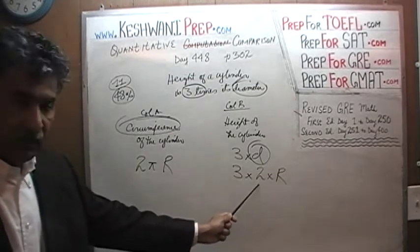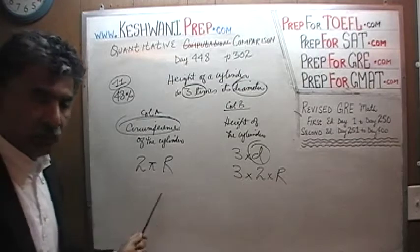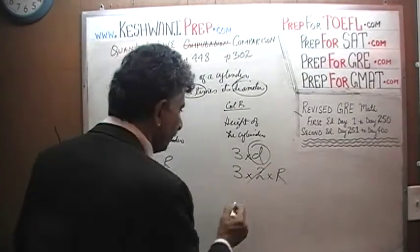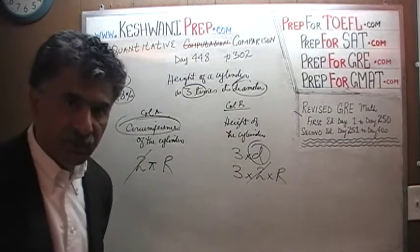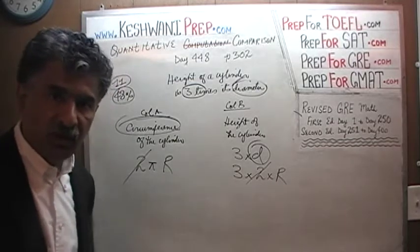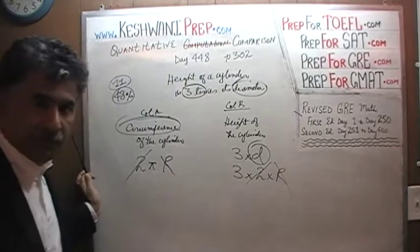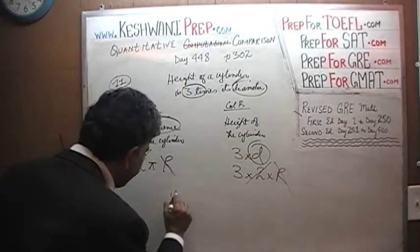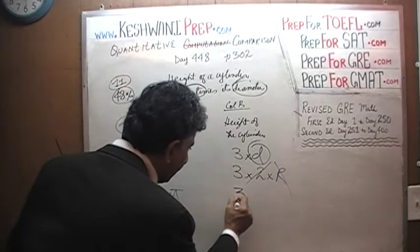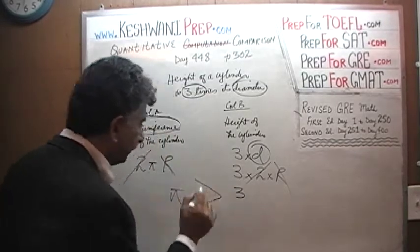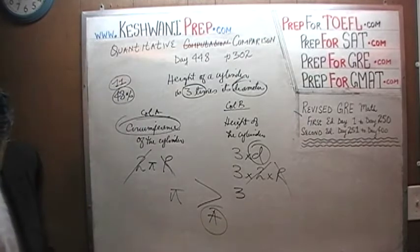We see a factor of 2 in both columns. Let's divide both columns by 2 — the 2 drops out. We see r on each side. Let's divide both columns by radius — the radius drops out. And what we are left with is π in column A versus 3 in column B. And of course π is more than 3. The answer is A.